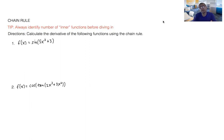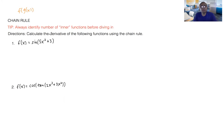The tip of the day is to always identify your inner and outer functions. When you're using the chain rule, you're using it when you have cases that look like f of g of x — some function inside of another. The key tip is to know how many functions you have.